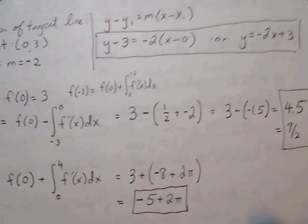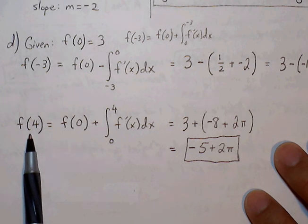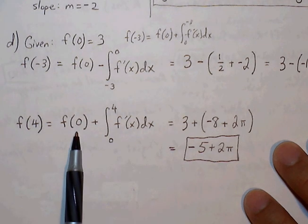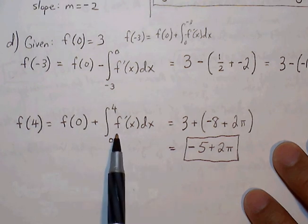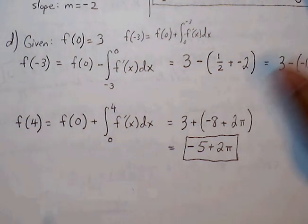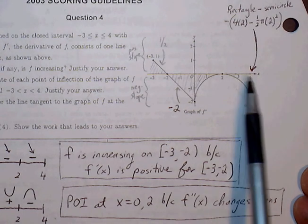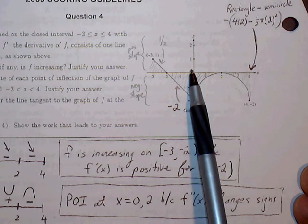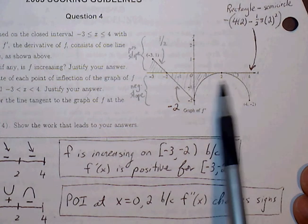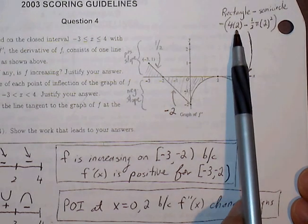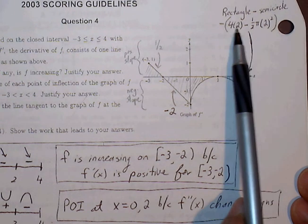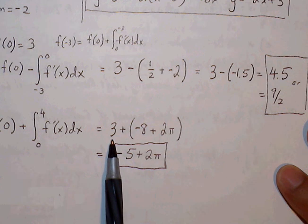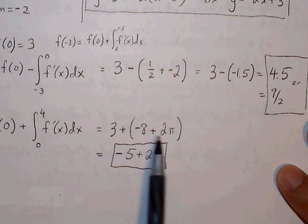We also want to find F of 4. F of 4 equals F of zero plus the definite integral from zero to four of F prime. Looking at the shaded region, it's a rectangle minus a semicircle. The rectangle is 4 times 2, and the semicircle is one-half pi r squared with radius 2. Combining: negative 8 plus 2 pi. Adding the initial position: 3 minus 8 plus 2 pi gives us negative 5 plus 2 pi.